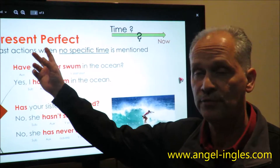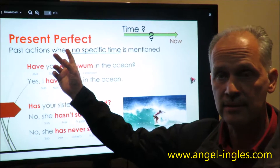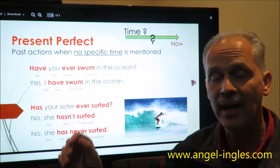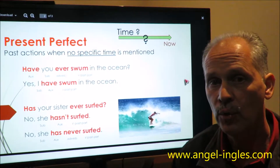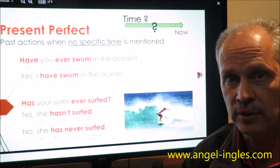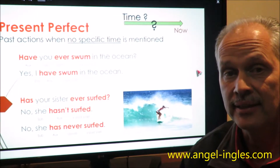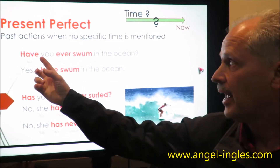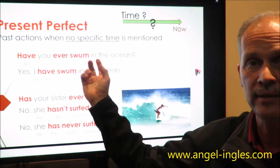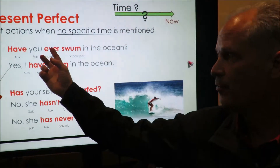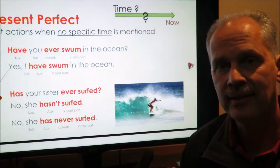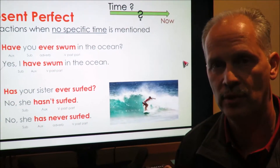The present perfect tense is used for past actions when no specific time is mentioned. An example of that is: have you ever swum in the ocean? This word 'ever' means at any time in your life.